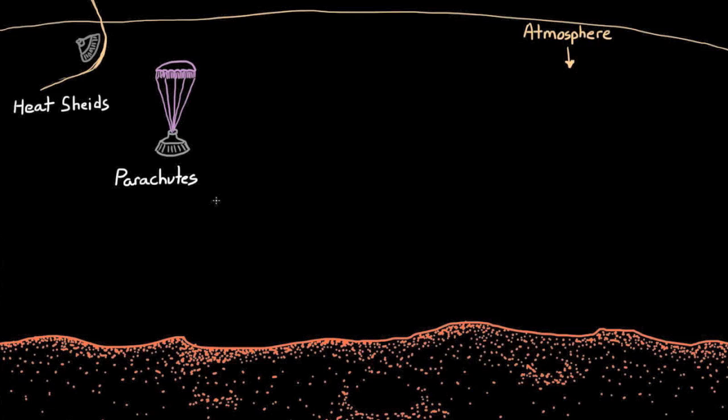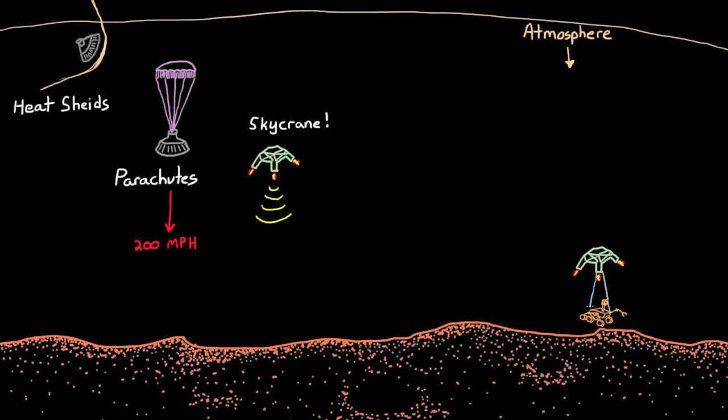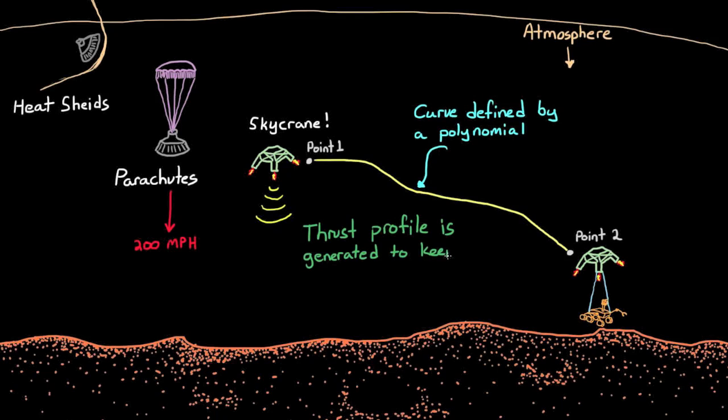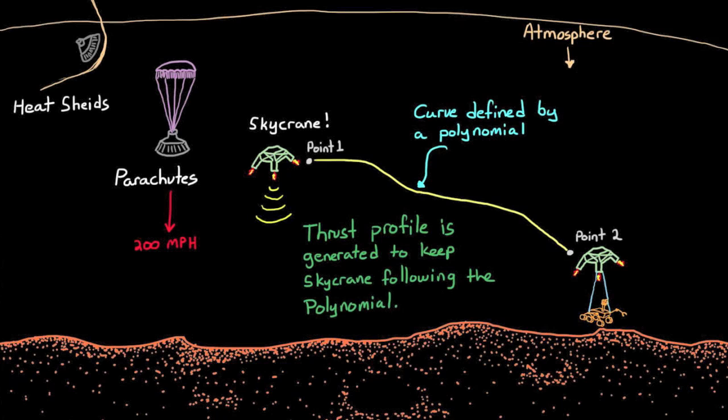Unfortunately, Mars' atmosphere isn't dense enough to allow a lander as heavy as MSL to land under the aid of parachute alone. MSL was slowed only to about 200 miles per hour. Therefore, the entry-descent landing team at JPL developed the Skycrane, which performed the soft landing function. From this point, we're back to our two-point boundary value problem, just with a lower initial speed. MSL used polynomial guidance rather than a gravity turn to get to the surface. With polynomial guidance, a polynomial is created that connects the two boundaries, and from this the acceleration and thrust profile is generated that keeps the Skycrane following that polynomial. The benefit of this method is that you have better control over fuel consumption, because you can pre-choose a descent trajectory that uses less fuel than gravity turn.